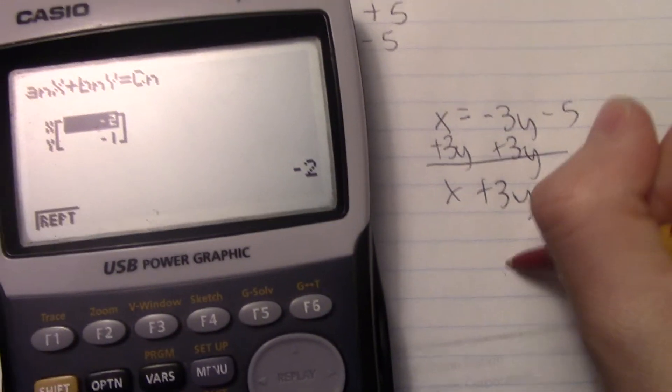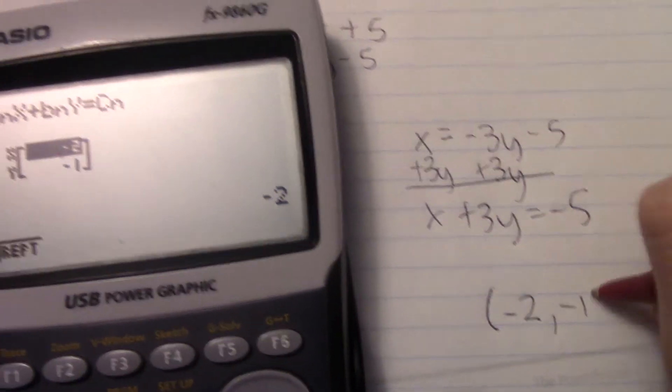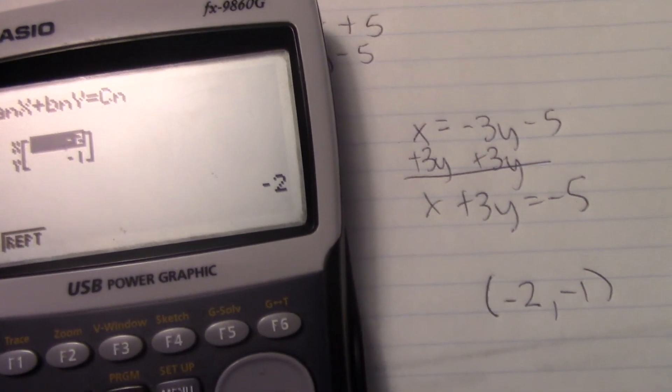And we get negative 2 comma negative 1. And that's how you solve it. Thank you.